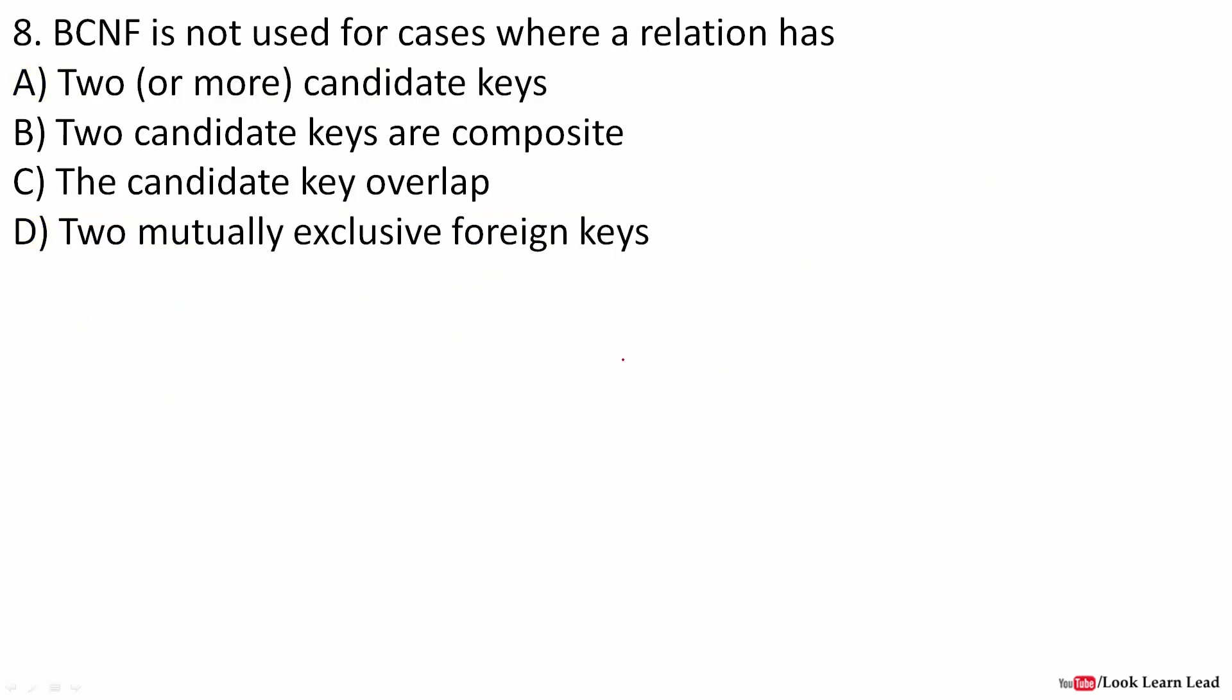BCNF is not used for cases where the relation has what? If the candidate keys are composite, then we cannot use BCNF. If the candidate keys are composite, there is a possibility of partial dependency. It is not sure that there would be a partial dependency, but there is a possibility. If there is a partial dependency, the relation would not be in 2NF. If it is not in 2NF, then it would not be in BCNF or 3NF. The answer is two candidate keys are composite.